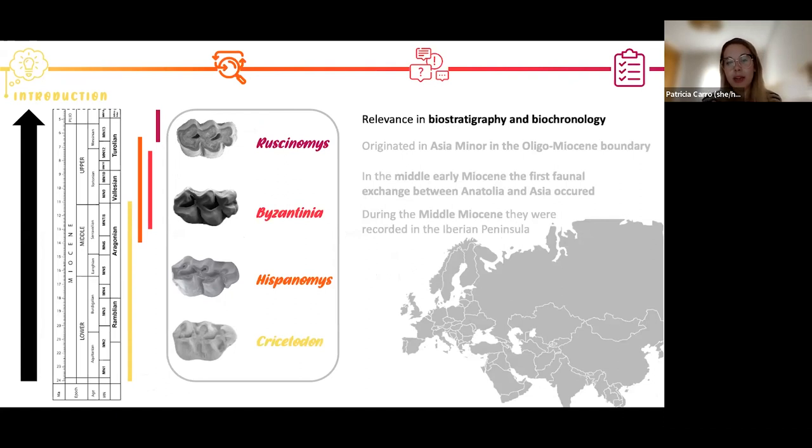While Cricetodon presents brachiodont molars, the rest of them present hypsodont and Ruscinomys hypselodont molars.